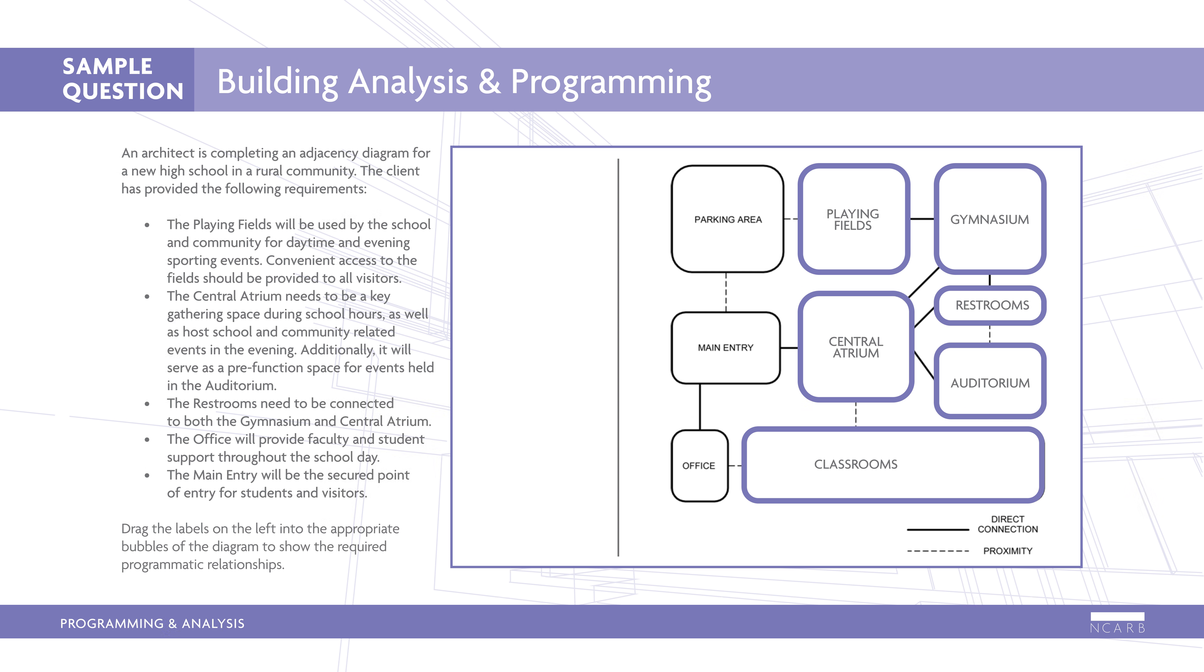The central atrium should be located central to the major program spaces with a connection to the main entry for secured access to evening events. Since the central atrium is also a pre-function space for the auditorium, the spaces should be directly connected.